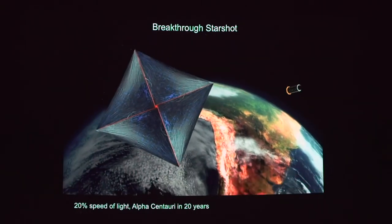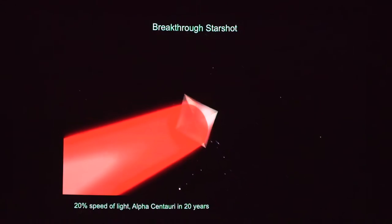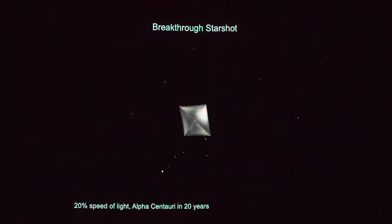And so you have spacecraft that have these solar sails, and you use laser beams to basically propel them to up to 20% the speed of light. And if they're going that fast, then they can get to Alpha Centauri in only 20 years, which is great.